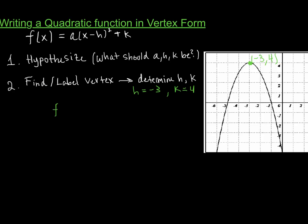At this point, I have F of X equals A times X minus H squared plus K — I don't know A yet, but I know H and K. So it becomes A times X minus negative 3 squared plus 4, which is A times X plus 3 squared plus 4. The last thing I need is the value of A. Pause and think about what information you have from the graph that could help you determine exactly what the A value is. We already think it should be negative, but how do you find the exact value?